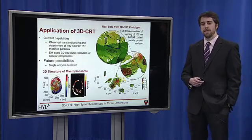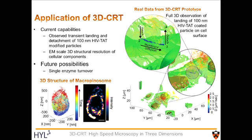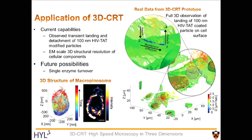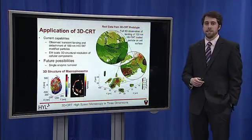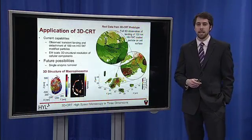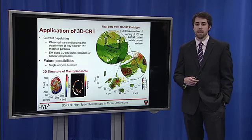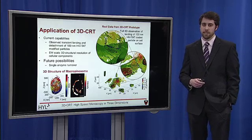By using 3DCRT, we can focus on the dynamics of a single molecule-scale particle of interest, allowing for the study of the previously impossible. This includes full mapping of the viral infection pathway. We have already used our 3DCRT prototype to monitor landing and attachment of artificial HIV viral particles to the cell membrane in full 3D context. Observation of the rapid binding of a single virus to the cell surface is critical to our understanding of viral infection.